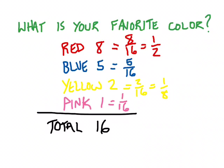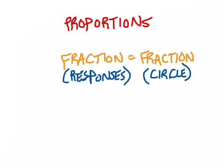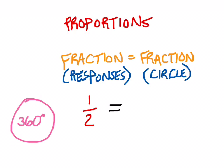So jumping back, we can see that red had half the responses. So the fraction of responses was one half. And I want to say that that is equal to the fraction of the circle. Now this is the part that we don't know. It's the part that we want to know. So we need a fraction for the circle. The nice thing is that we know what the circle is made up of. A circle is made up of 360 degrees.